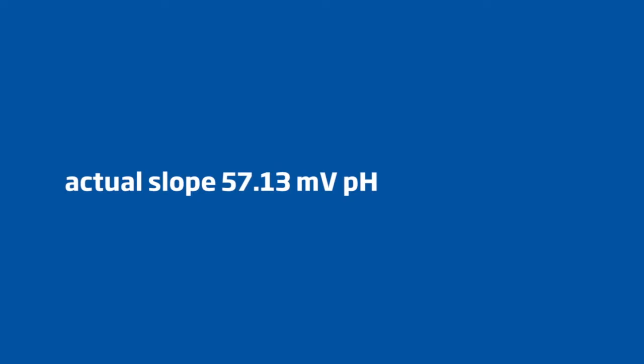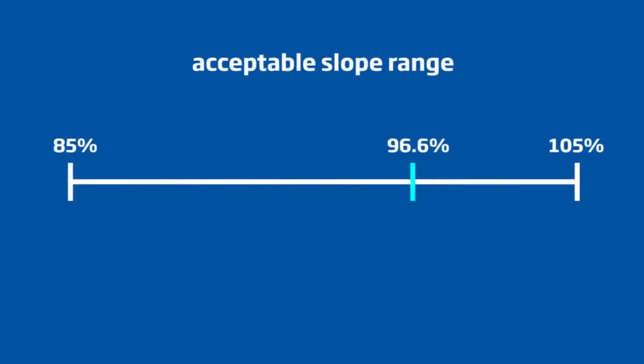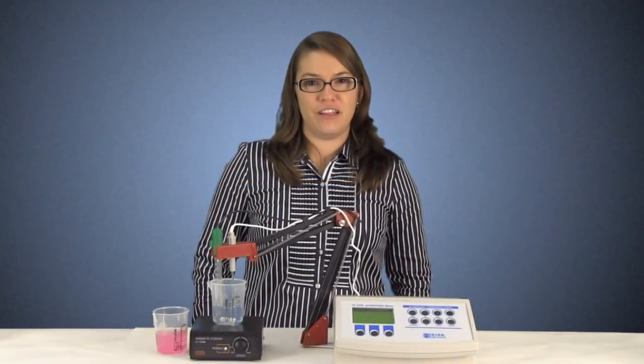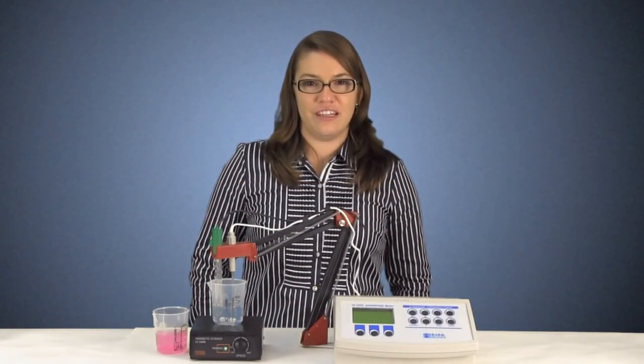We then divide this actual slope by the theoretical slope as defined by the Nernst equation, 59.16, to determine the slope percentage. The slope percentage of this HI1131B is 96.6% which falls in the acceptable range of 85 to 105%. If your pH electrode meets both these criteria, then you have a functioning electrode and you can proceed with calibration and measurement.